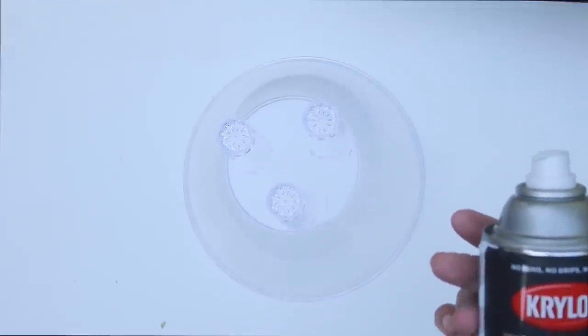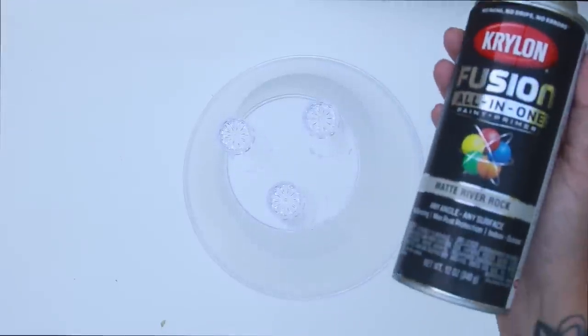All right you guys, so I got my spray paint. This color is called matte river rock and it's from Krylon. I'm going to start with the legs and I'm going to flip it over and spray paint the inside.